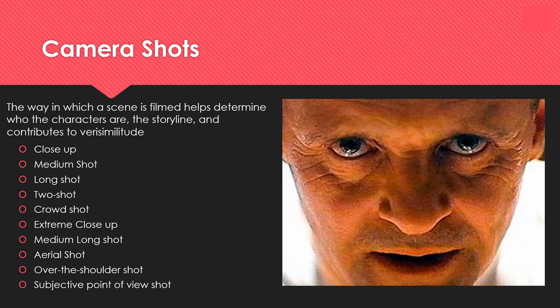There are things you can do with a camera that will really help add emphasis, emotion, or effect on the audience. Camera shots and camera angles — the way a scene is filmed — helps determine who the characters are, the storyline, and what contributes to verisimilitude. For the purpose of this exam, rather than going through every single camera angle, you just need to think about specific camera angles and how they've been used. We've looked at Saving Private Ryan, Silence of the Lambs, Grown Ups, Halloween, and all kinds of different examples.